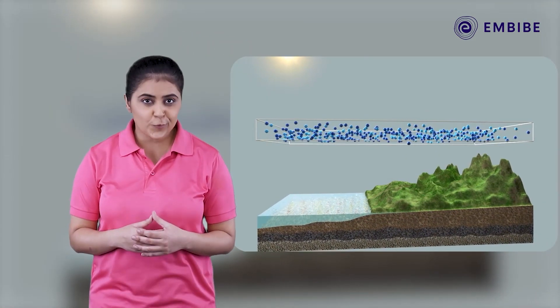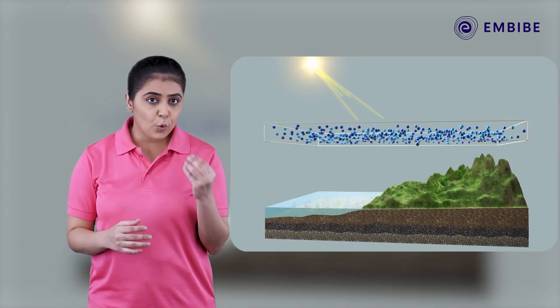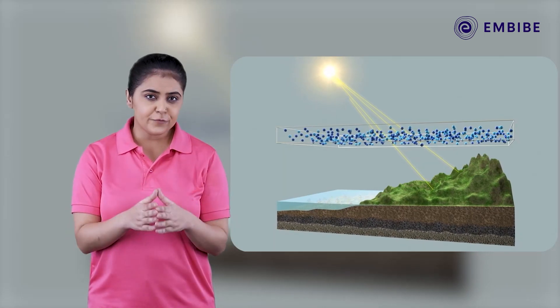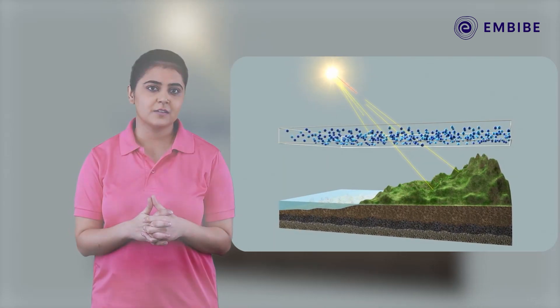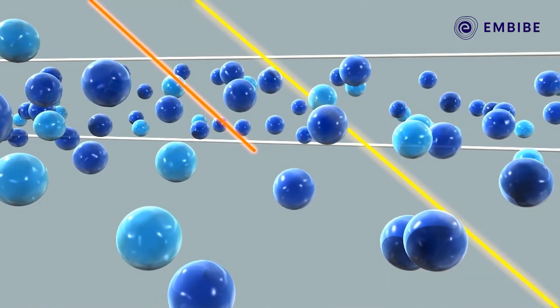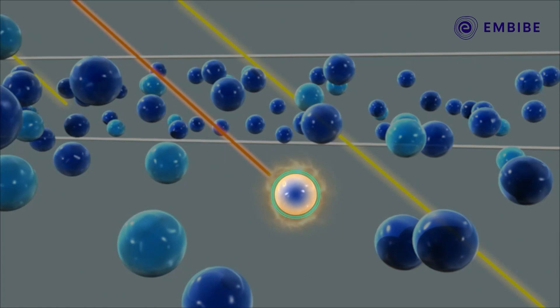However, the ozone layer performs a very essential function. It absorbs a portion of the sun's radiation, thus preventing it from reaching the planet's surface. Most importantly, it absorbs the portion of the ultraviolet light called UVB.